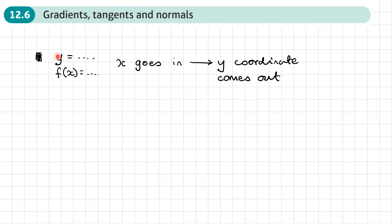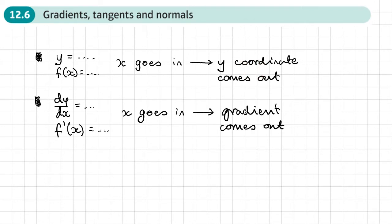When we've got y equals something, or f of x equals something, we put the x coordinate in and out pops the y coordinate. However, when we've worked out the derivative — dy/dx or f dash of x — when we put the x coordinate in, what comes out is the gradient.